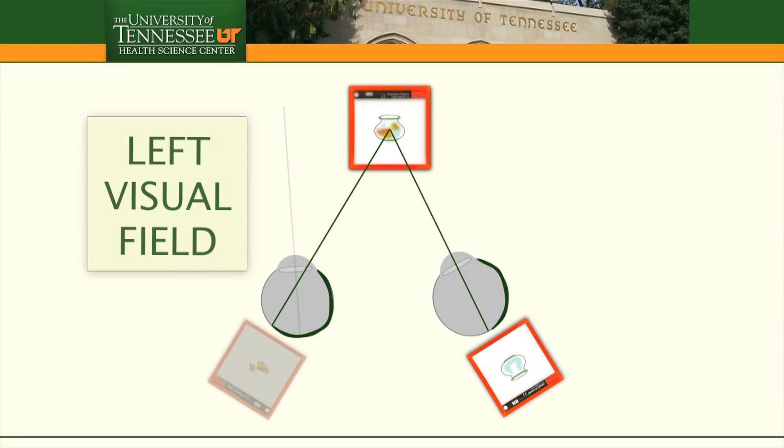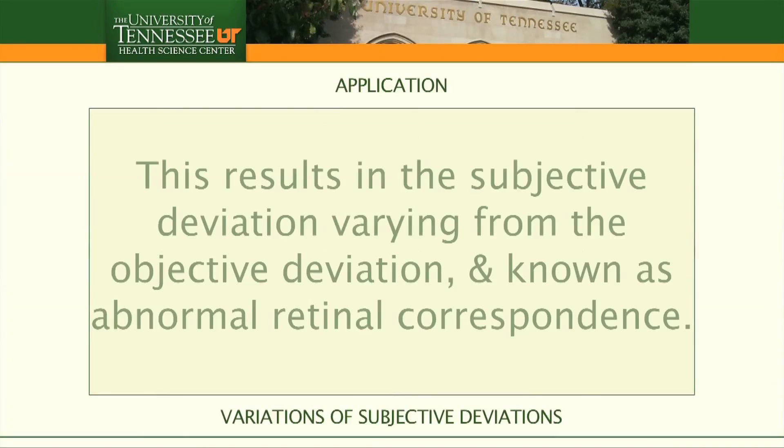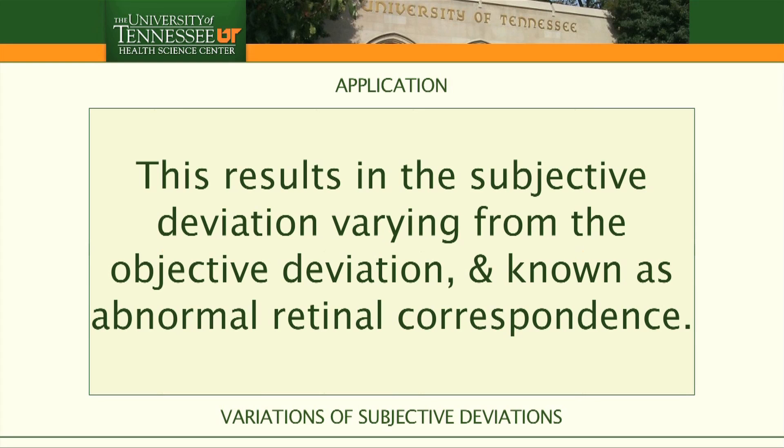When total transformation of retinal correspondence in one eye occurs, binocular vision is no longer inharmonious. Diplopia ceases and fusion may occur. This results in the subjective deviation varying from the objective deviation and is known as abnormal retinal correspondence.